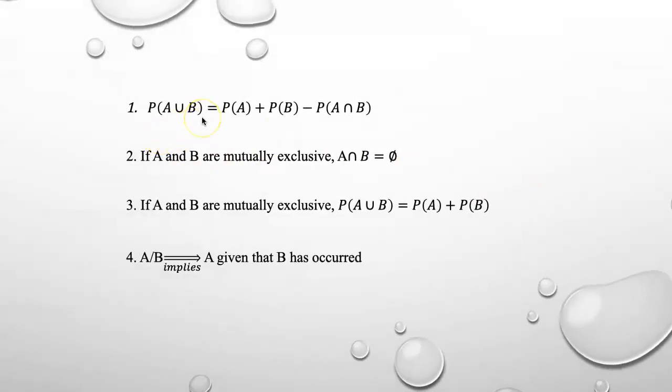Probability of A union B is probability of A plus probability of B minus probability of A intersection B. If A and B are mutually exclusive, A intersection B is empty and probability of A union B is probability of A plus probability of B because probability of A intersection B will be 0.